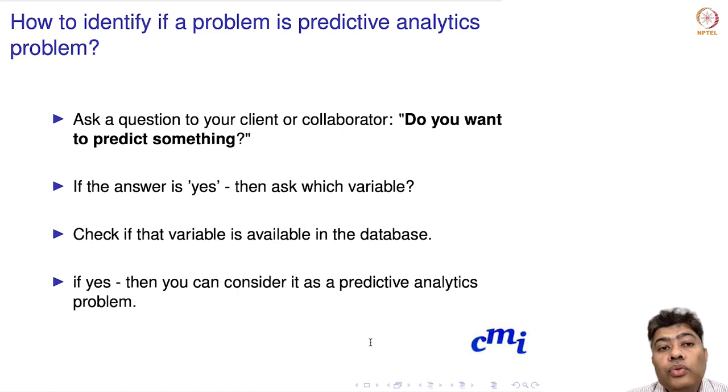How do you identify if a problem—a business problem, a scientific problem, any problem—is a predictive analytics problem? Ask your client or collaborator: Do you want to predict something? If the answer is yes, then ask which variable you want to predict. Check if that variable is available in the database. If yes, then you can consider it a predictive analytics problem.